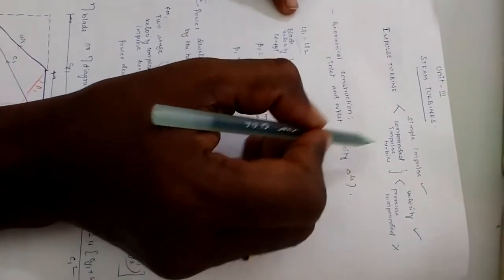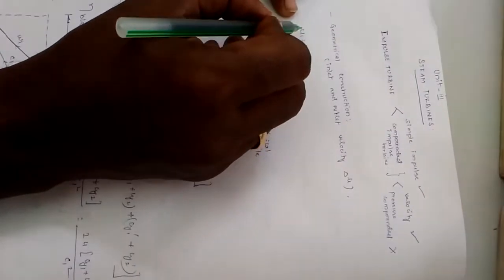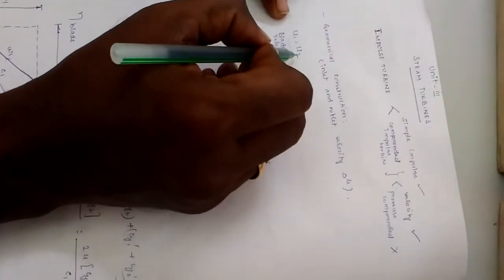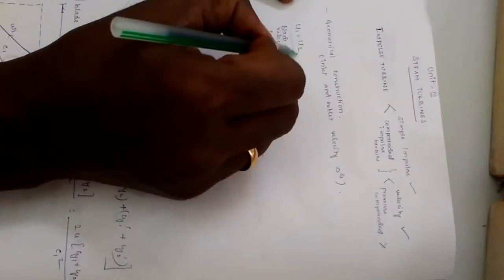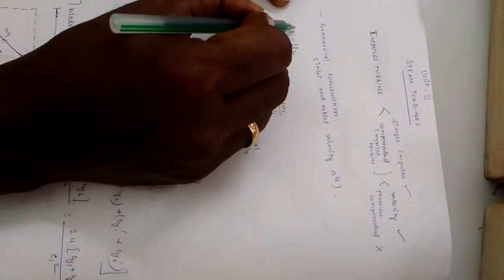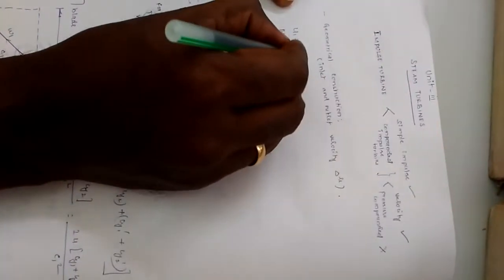In the case of simple impulse turbine or impulse turbine, the blade velocity at inlet and the blade velocity at outlet are going to be same, that is u1 equal to u2. u1 or u2 refers to the blade velocity, or you can call it as u also.